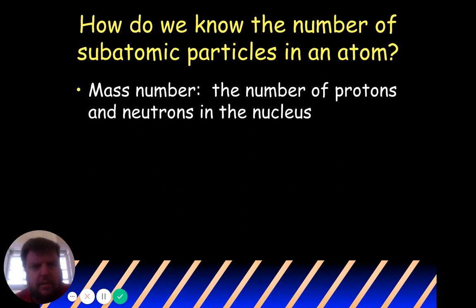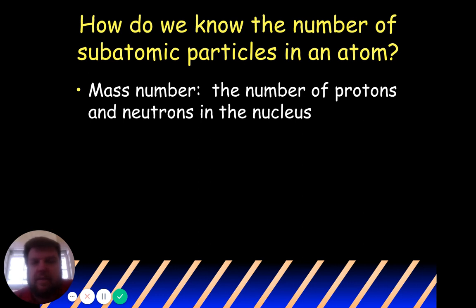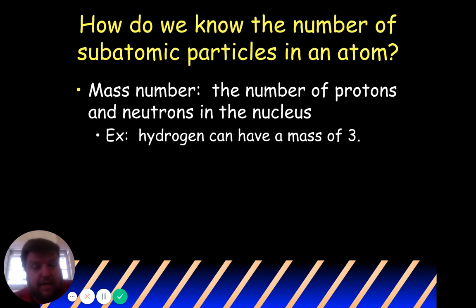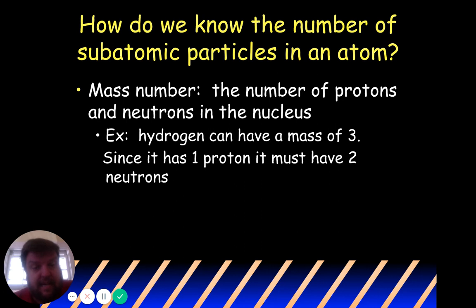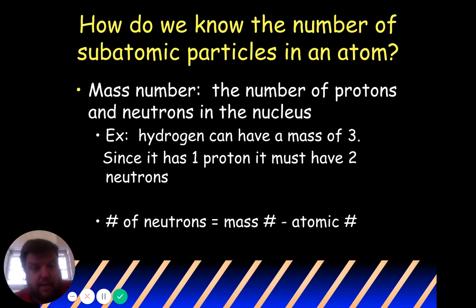How do we know the other particles? The mass number is the number of protons plus the number of neutrons in the nucleus. Remember, electrons have very little mass so we don't calculate them in the mass number. Protons plus neutrons equal the mass number. So hydrogen can have a mass of three — since it has one proton, it must have two neutrons. The number of neutrons equals the mass number minus the atomic number.